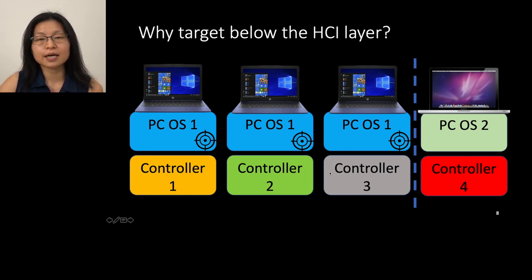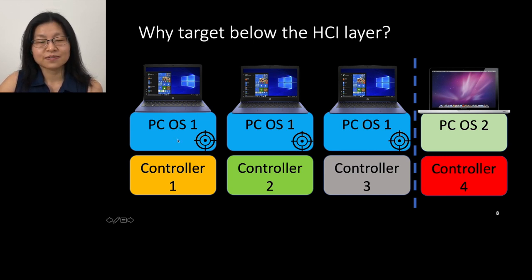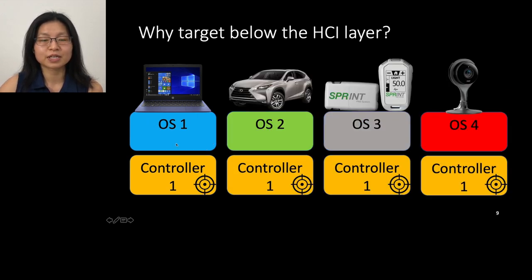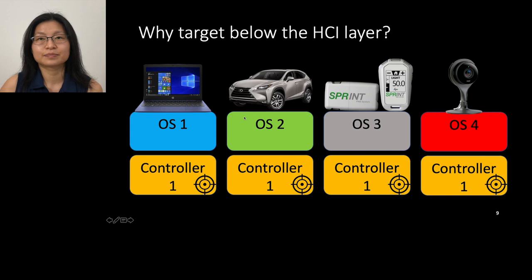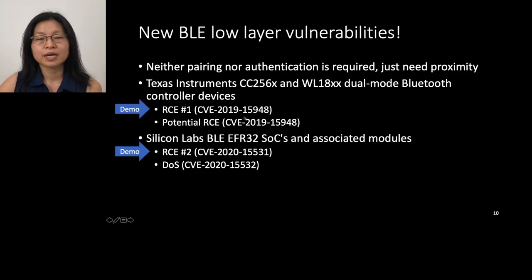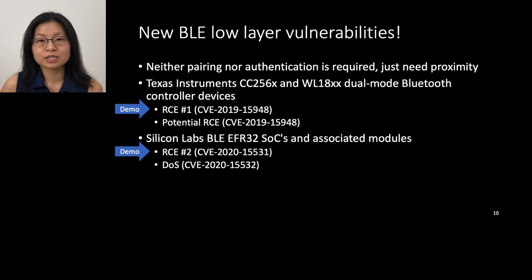Let's see why an attacker is interested in finding these low-layer vulnerabilities. If an attacker finds a vulnerability in a specific protocol stack, they can only attack a single class of devices. But if they find a vulnerability in the controller's low layer, and that controller is used across different classes of devices, they can attack PCs, cars, medical devices, or IoT devices. Beyond that, attacking this lower layer does not require authentication or pairing — the attacker just needs to be nearby the device. I'm going to talk about four vulnerabilities on this low layer today.